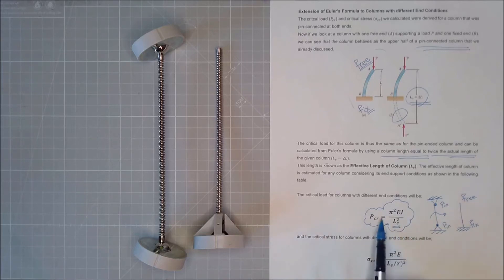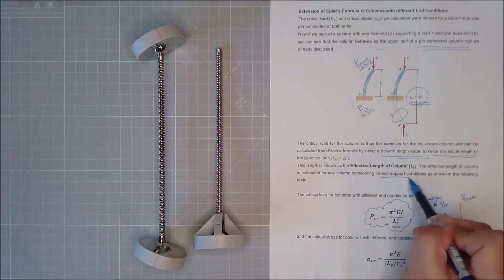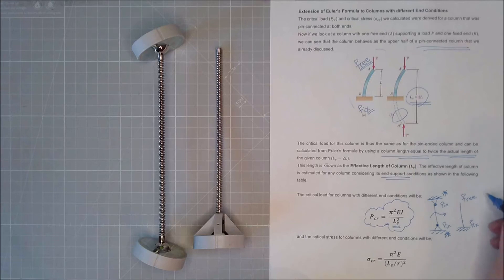This length that I change due to the conditions is called the effective length of the column. The effective length of the column is estimated for any column considering its end supports, as we did as well. So it was pin pin in the beginning, then I change it to free, fixed, and then the LE changed.